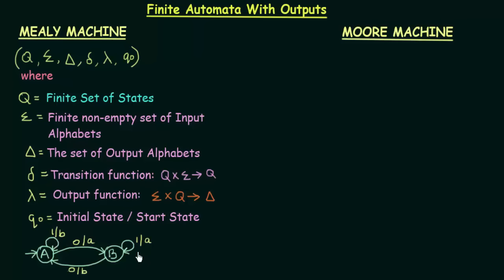We see that outputs are associated with each input and the current state. For example, output small b is produced when we are in state A and get input 1 — defined by both the state A and input 1. Similarly, output small a is produced when we are in state B and get input 1. That is how the output function of a Mealy machine is defined.